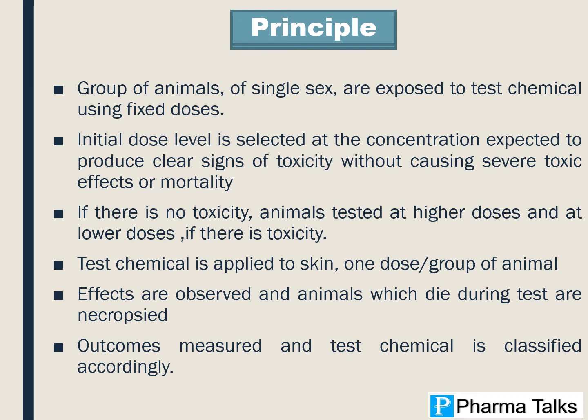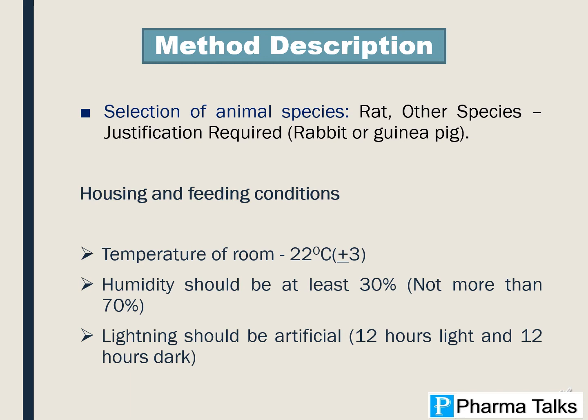Outcomes measured in the test chemical are classified accordingly. Method description — Selection of animal species: Rat is the primary species; other species require justification, such as Rabbit or Guinea Pig. Housing and feeding conditions: temperature of room should be 22°C plus or minus 3°C. Humidity should be at least 30% and not more than 70%. Lighting should be artificial, 12 hours light and 12 hours dark.